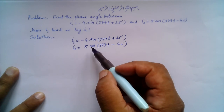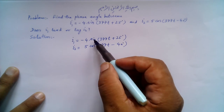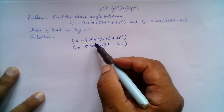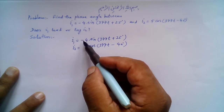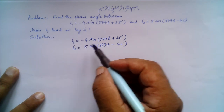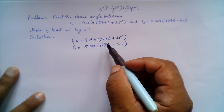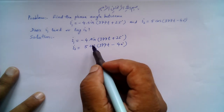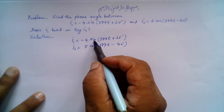First, they must be of the same form — but here they are different: i1 is sine and i2 is cosine. They must both be sine or both be cosine. Second, the sign must be the same, but here we have positive and negative, so this condition is also not satisfied. Third, the angular frequency must be the same — and the angular frequency is the same here.